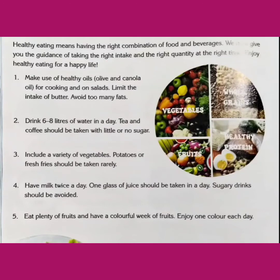Point number three: Include a variety of vegetables in your diet. Potatoes and french fries should be taken rarely. हमें अपने healthy diet में कई प्रकार की सब्जियों को शामिल करना चाहिए। Green vegetables में बहुत सारे iron, protein और vitamins होते हैं — जितने colorful vegetables आप खाओगे उतनी vitamins आपकी body में आएंगी। आलू और उससे बनी चीजें बहुत ही कम मात्रा में खानी चाहिए।